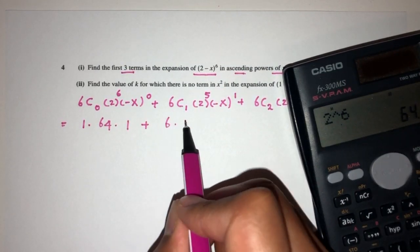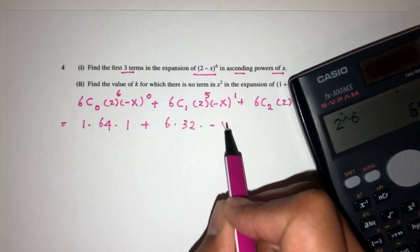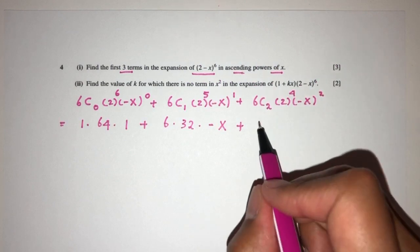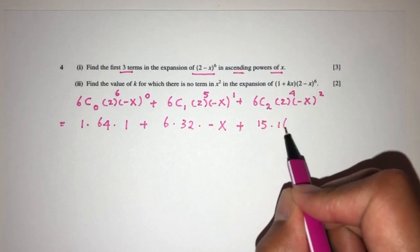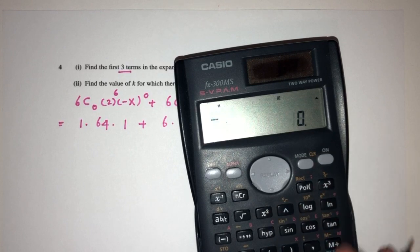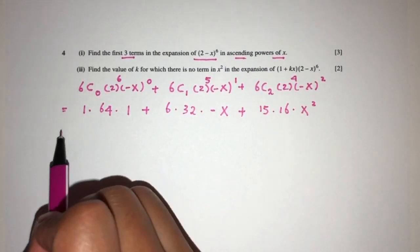That'll be 6, 32 will be minus x. And 6 choose 2, that'll be 15. That'll be 16 and x squared. 2 power 4 is 16. So let's see what else can we do. We can simplify that.